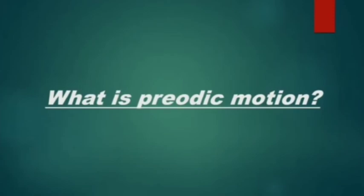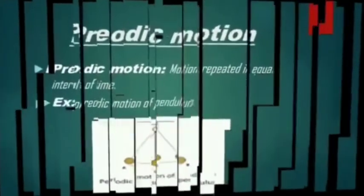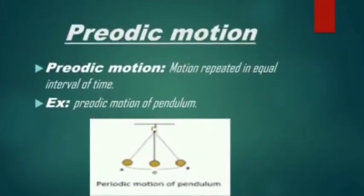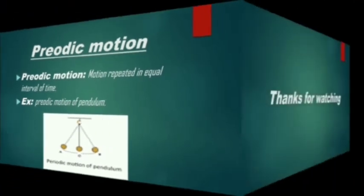What is periodic motion? Periodic motion is motion repeated in equal intervals of time. For example, the periodic motion of a pendulum.